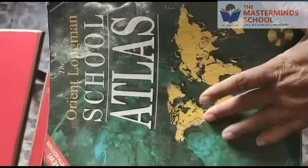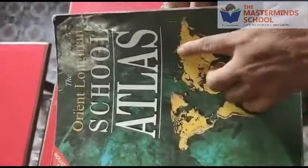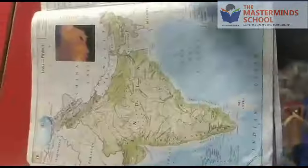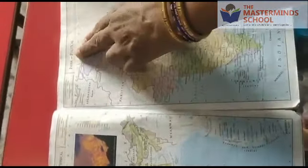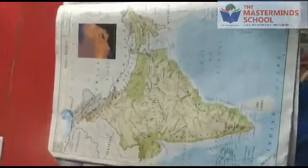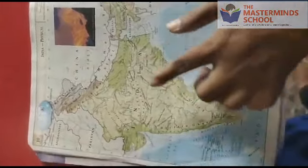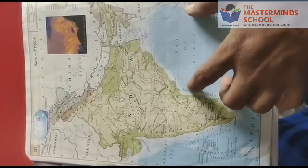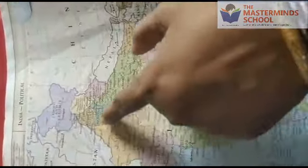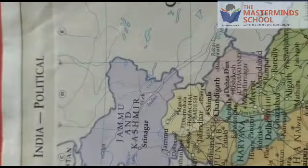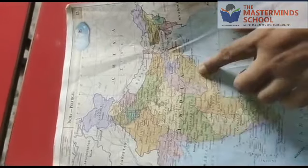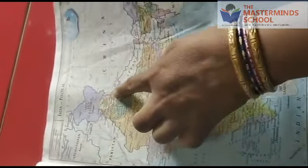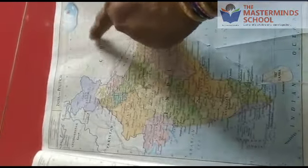Now I will show you this book. This book is called Atlas, and in it we get different types of maps. Here you can see this is an India map — this is the physical map of India, and here you can see the political map of India. Different colors are given so that we can find places very easily. In the political map we can find different states, different countries, and the boundaries of the places.